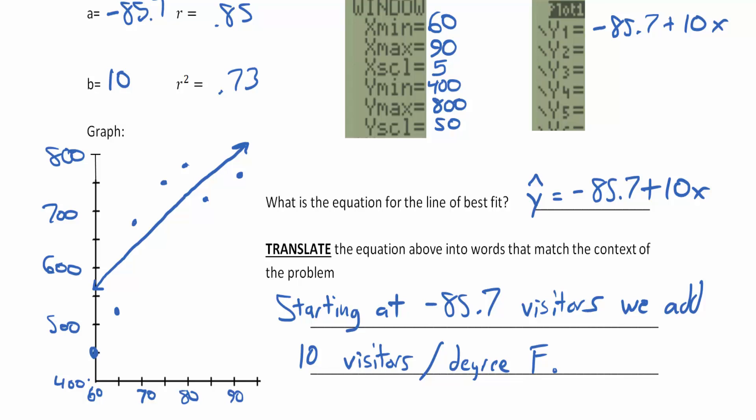Our graph doesn't start at zero degrees because we're not going to run this summer fair in zero degree temperature. The equation makes sense numerically, but then when you see it written out you go, that's not possible. And you're right, it's not possible. We have to get much warmer before those 85.7 visitors turns into a positive number.